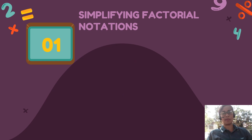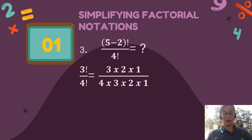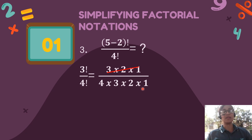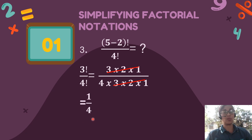Let's have the last number 3. You have quantity 5 minus 2 factorial all over 4 factorial. The top part will become 3 factorial all over 4 factorial. Expanding 3 factorial: 3 times 2 times 1 all over 4 times 3 times 2 times 1. There are common factors — 3, 2, 1 on both top and bottom — which we can cancel. What's left on top is 1, and what's left on the bottom is 4. So our final value is 1 over 4.